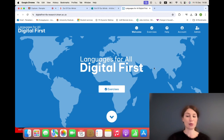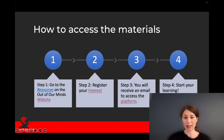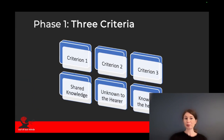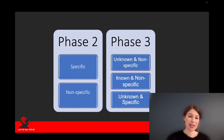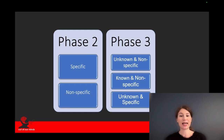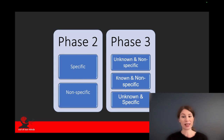This is the platform where all the activities are included, and then you can start your learning. The first phase includes three criteria, as we explained before: certain knowledge, unknown to the hearer, and known to the hearer. Phase 2 explains specific and non-specific referents, and then phase 3 combines both: unknown and non-specific, known and non-specific, and unknown and specific.